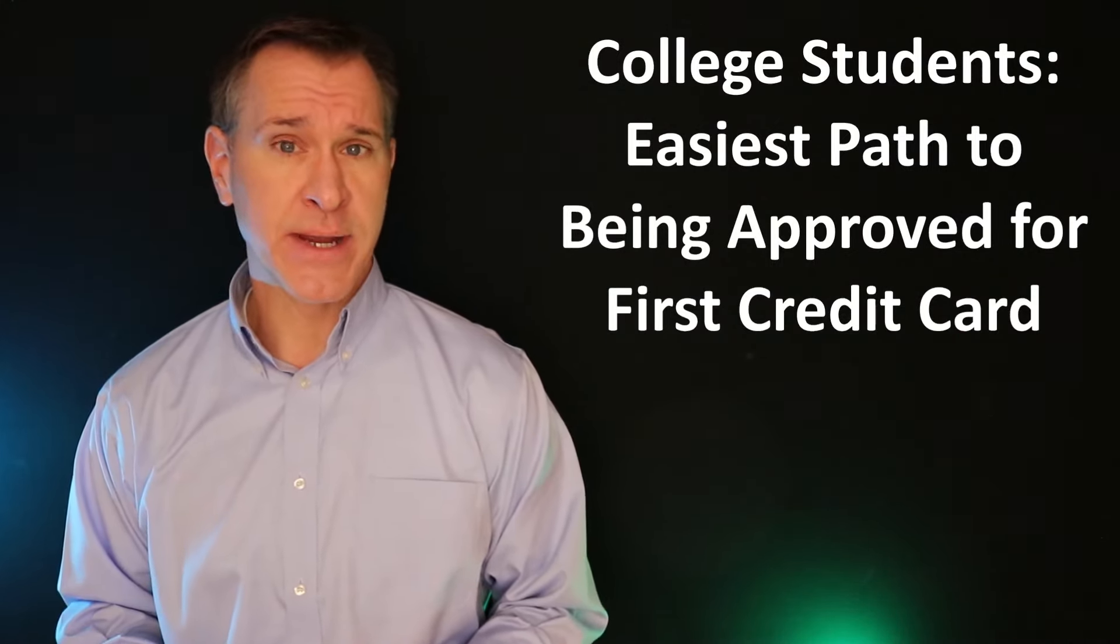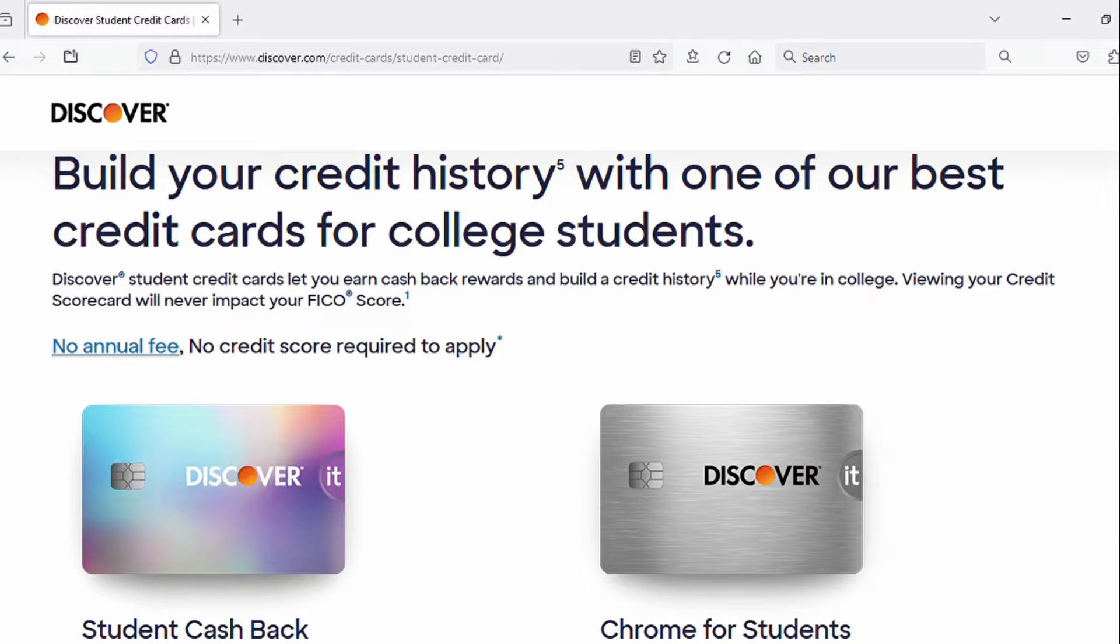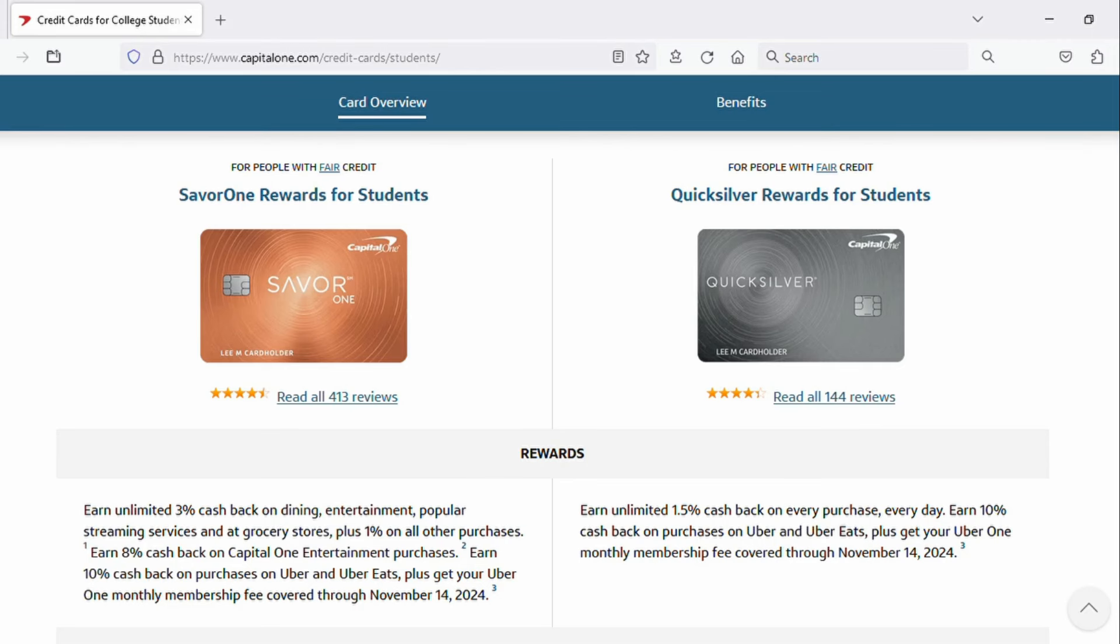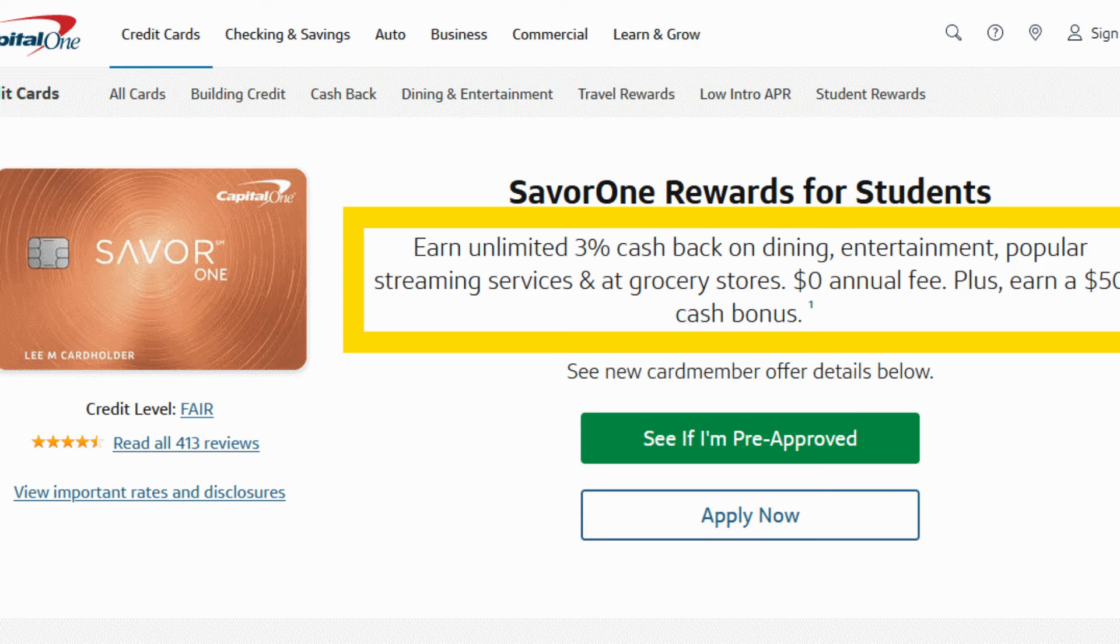Now Discover, if you are a college student, may have already marketed to you. You may have already gotten some stuff in the mail from them. They are a decent place to start. I would probably tell you that instead you should start with Capital One with either their SavorOne card for students or their Quicksilver card for students. The SavorOne card has no annual fee. You're going to get 3% cash back on your dining purchases, your entertainment purchases, 3% back at grocery stores, 3% back at most streaming services, 1% everywhere else.